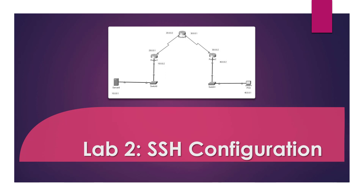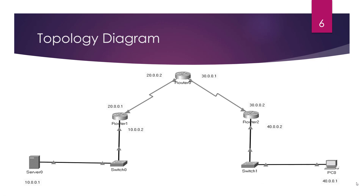In this lab, let us see the topology diagram. We are going to use 4 networks: the 10 network, 20 network, 30 network, and 40 network. The IP address plan is clearly given. We are going to do the SSH configuration on Router 1.